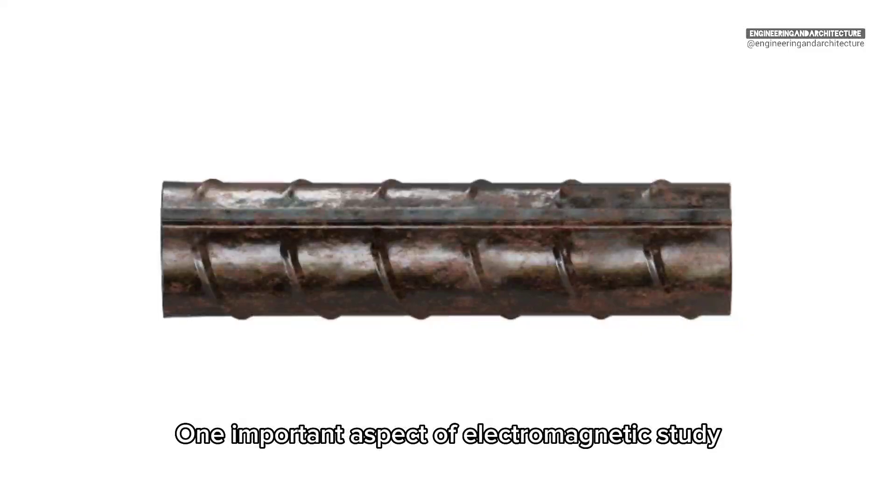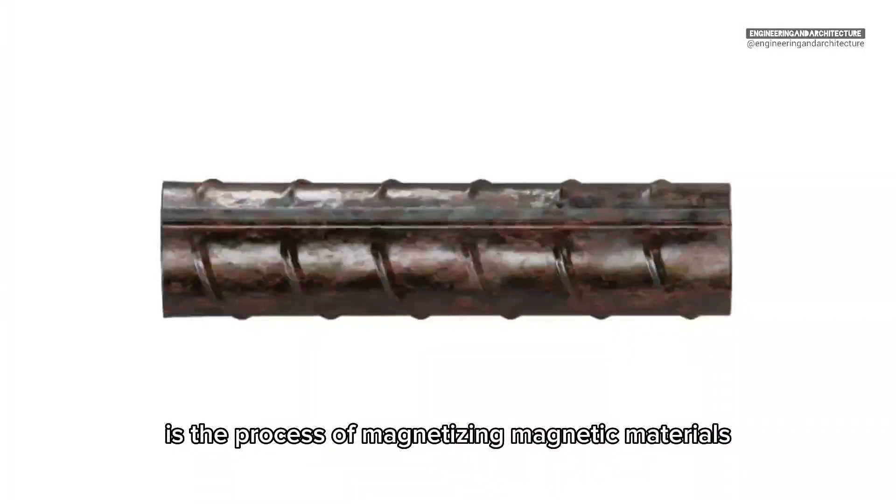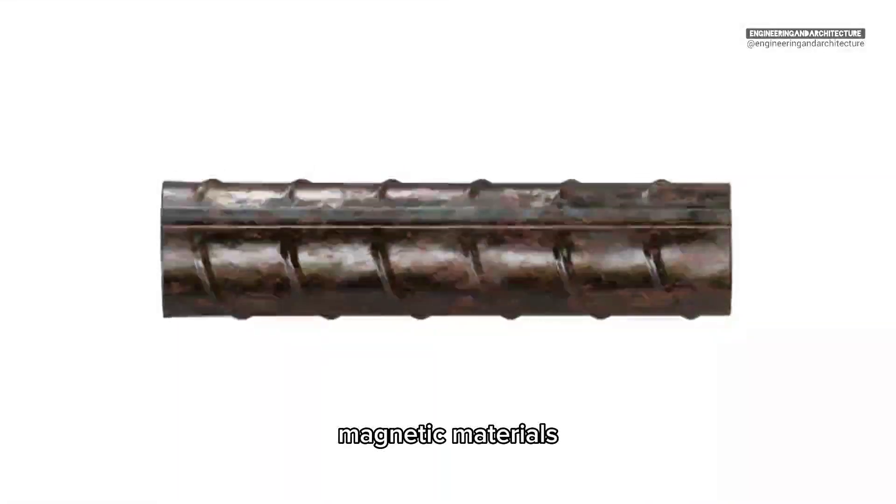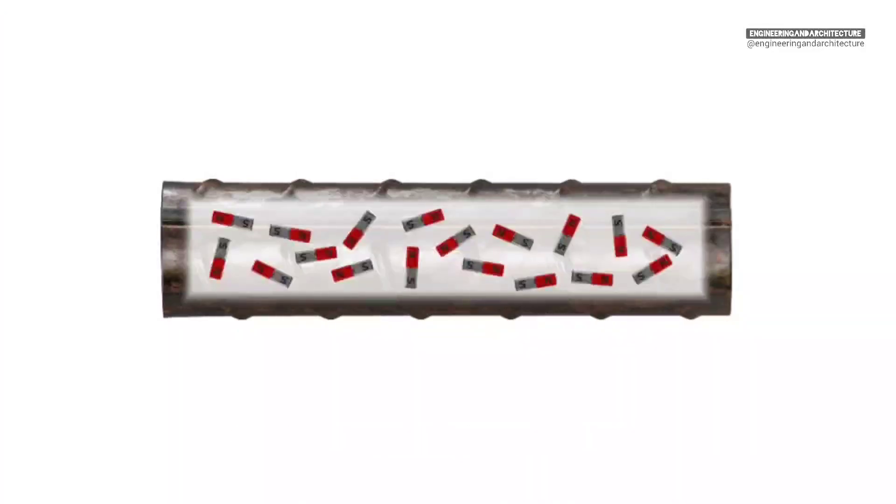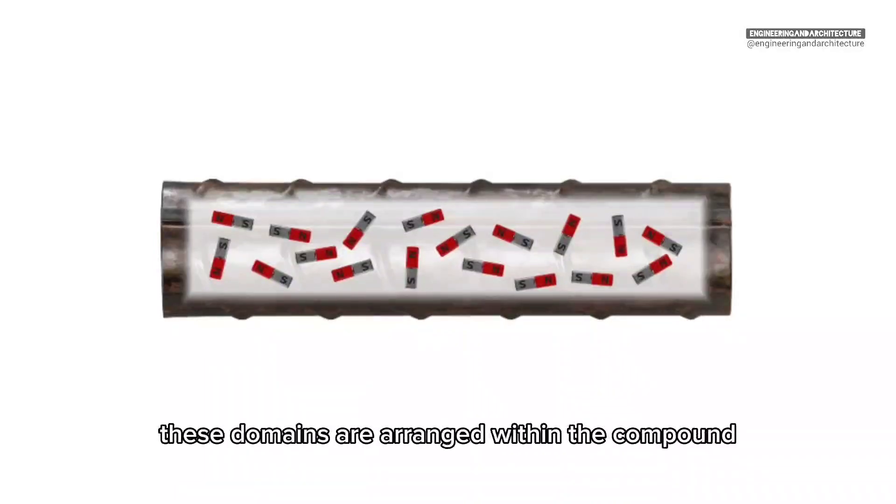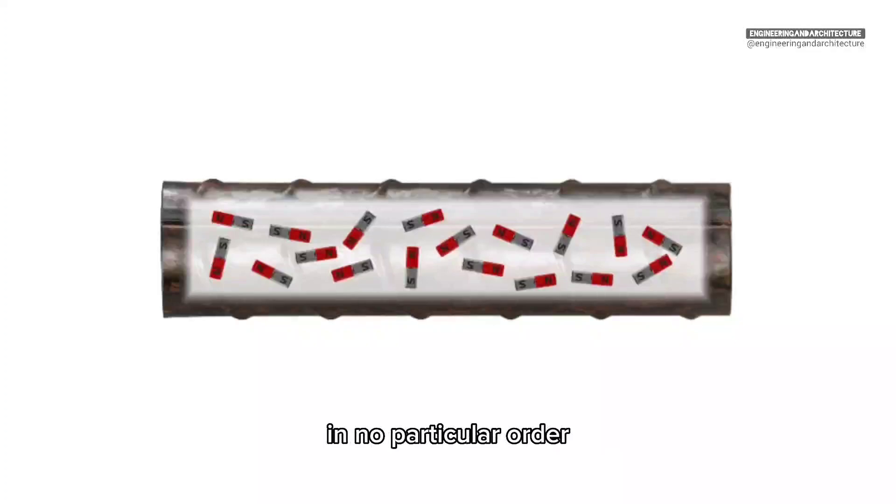One important aspect of electromagnetic study is the process of magnetizing magnetic materials. Magnetic materials, for instance iron, are made up of microscopic domains. When the material is unmagnetized, these domains are arranged within the compound in no particular order.